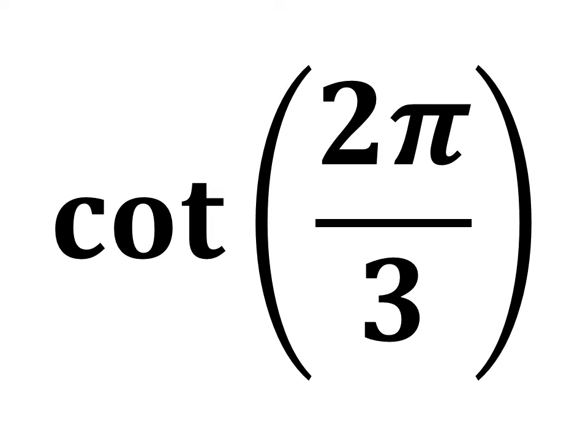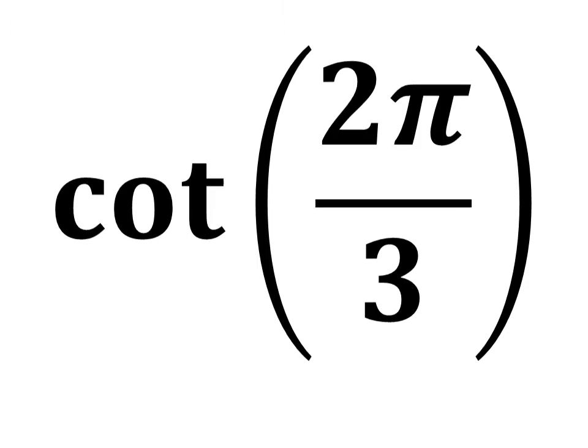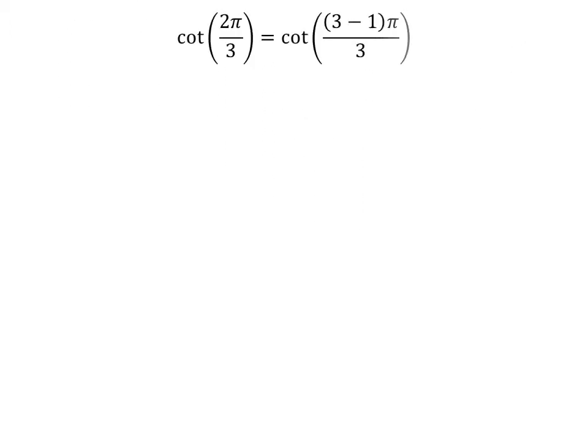In this video, we will learn to find the value of cotangent of 2 times pi upon 3. We know 3 minus 1 is equal to 2. So cotangent of 2 times pi upon 3 is equal to cotangent of 3 minus 1 times pi upon 3.